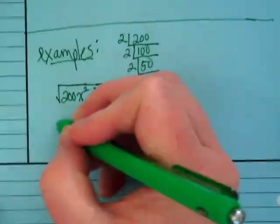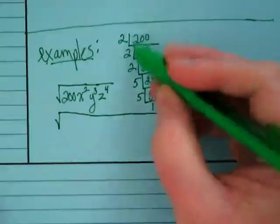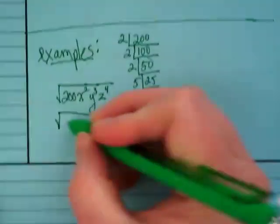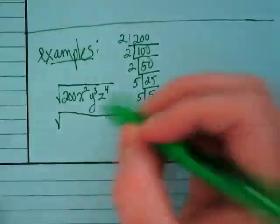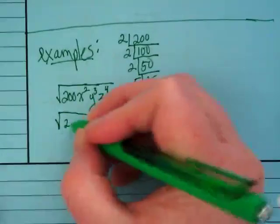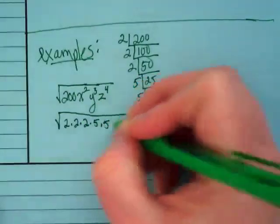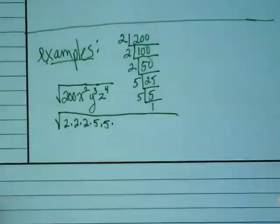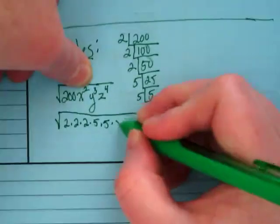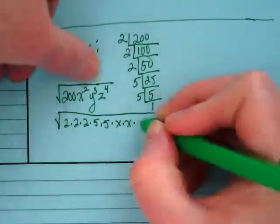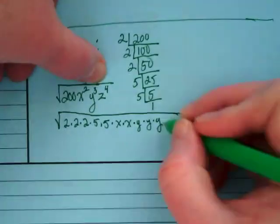And we're going to go back to the radicand and we're going to make it really long because we're going to write those prime factors out, and you don't want to do the shortcut version. You want to write all the twos. So I have three twos and two fives. How many x's are in here? So we're going to write times x times x times y times y times y. And how many z's?